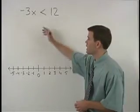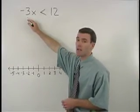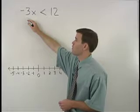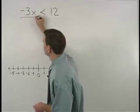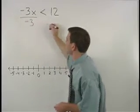In this problem, since x is being multiplied by negative 3 on the left side of the inequality, to get x by itself, we divide both sides by negative 3.